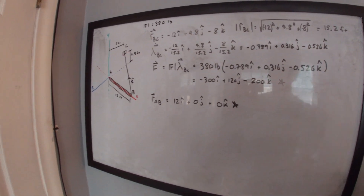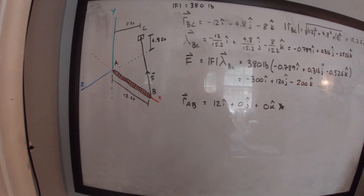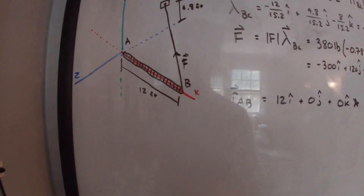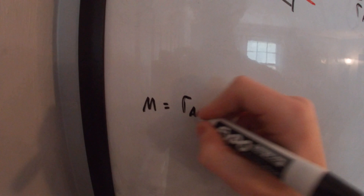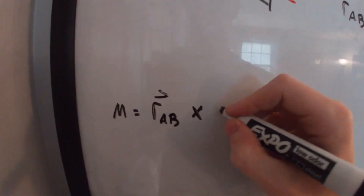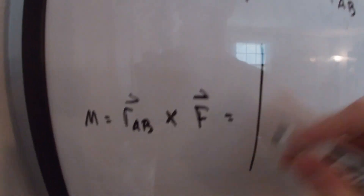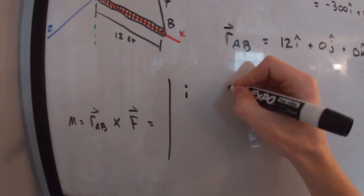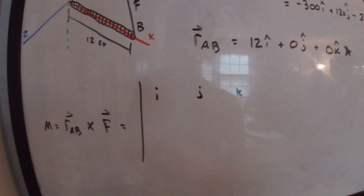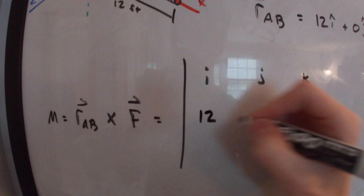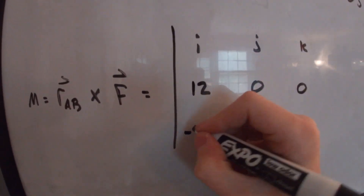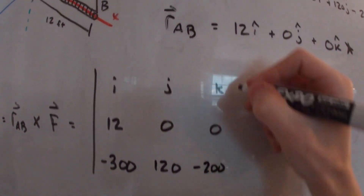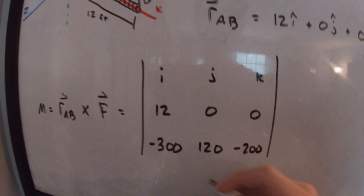When we take the moment using the matrix method, we write the moment as the position vector from A to B cross product of the force vector. In matrix form, that means placing I, J, K in the top row; the three components of the position vector — 12, 0, 0 — in the second row; and the three components of the force — negative 300, 120, negative 200 — in the bottom row. We are taking the determinant of this matrix.